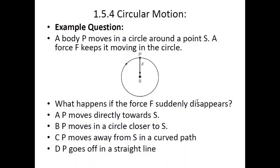Example question: a body P moves in a circle around a point S. A force F keeps it moving in a circle. What happens if the force F suddenly disappears? Option A: P moves directly towards S — no. Option B: P moves in a circle closer to S — no. Option C: P moves away from S in a curved path — no. Option D: P goes off in a straight line — that is the correct answer, because if the centripetal force is eliminated, the object continues in a straight line.